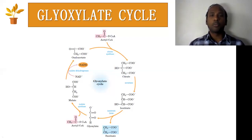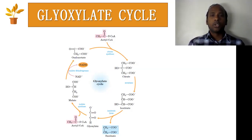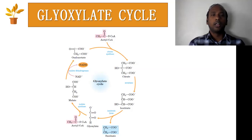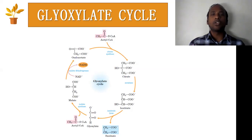Hello everyone. This is Dr. Kishar Kumar. Today I would like to discuss the glyoxylate cycle. In vertebrates, including humans, this cycle cannot operate because of the limitation of two enzymes. Humans cannot convert fats to glucose. This is a good example related to gluconeogenesis. The fat molecules stored in plants and certain microorganisms are converted into glucose molecules. This is an anabolic cycle involved in the synthesis of new glucose molecules from lipids or acetates of lipids.